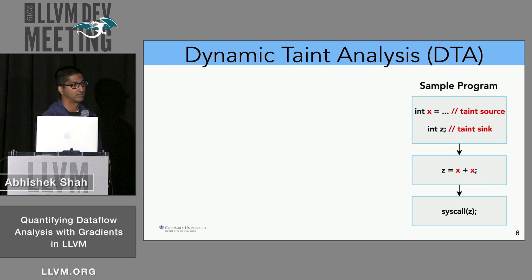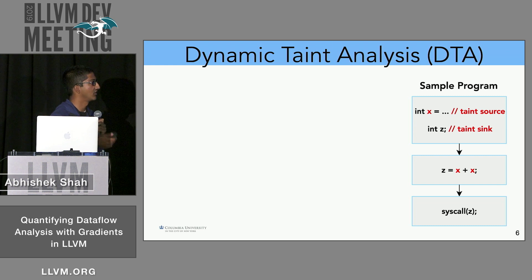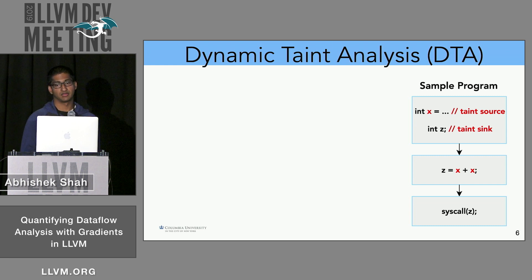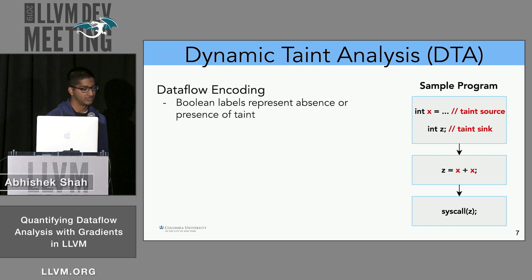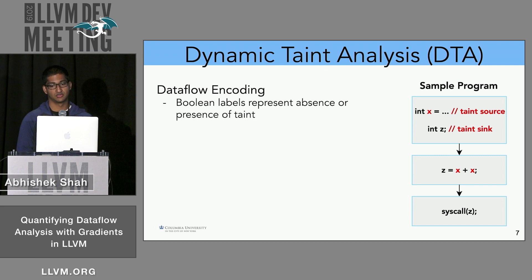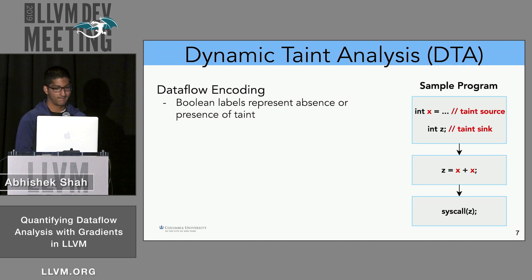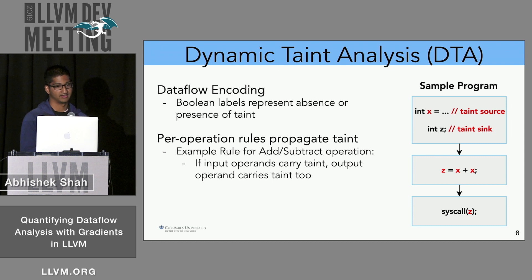One popular instantiation of data flow analysis is dynamic taint analysis. The idea is that we mark certain variables as sources and sinks, and detect if there's a flow of data between them. In this case, we mark variable x as the source, and see if this taint or color will flow to variable z. We encode this taint using Boolean labels, which represent the absence or presence of this color.